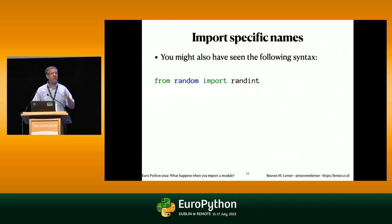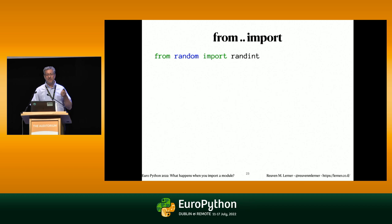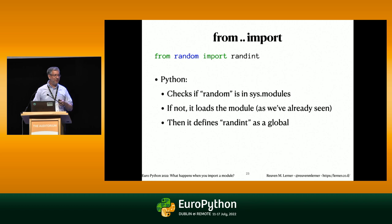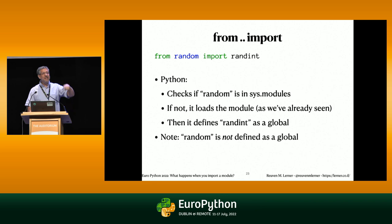You might have seen 'from random import randint'. You might think you're only loading that one little thing — does this save memory? No. Does this load the entire module? Yes. When you say 'from random import randint', it checks to see if random is in sys.modules. If it's not, it loads the entire module into Python and into that dictionary. Then it defines randint as the global rather than random. Random is not defined as a global. You're simply switching what global variable you're defining and what it's referring to.